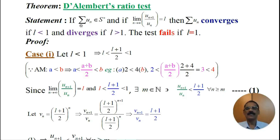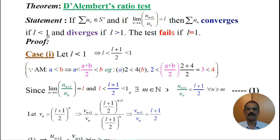That is, the given series Uₙ is a series of positive terms — every term of this given series is positive. And if the limit of the ratio Uₙ₊₁ by Uₙ as n tends to infinity is L, then the behaviour of the series Uₙ depends upon the value of the limit L. The series Uₙ converges if L is less than 1, diverges if L is greater than 1, and the test fails when L equals 1.